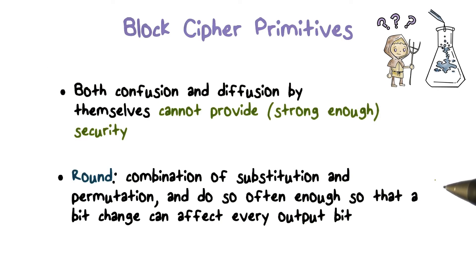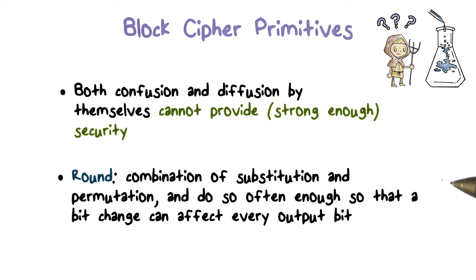Further, we need this combination to affect every bit of the ciphertext. Therefore, typically, a block cipher has multiple rounds, where each round combines substitution and permutation.